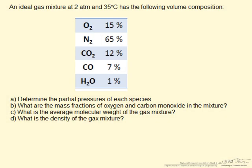This screencast is related to certain physical properties of gas mixtures, specifically that of an ideal gas mixture. The problem states that we have an ideal gas mixture at 2 atmospheres and 35 degrees Celsius with the following composition by volume percent. We are asked to determine the partial pressure of each of these 5 species, the mass fraction of just oxygen and carbon monoxide in this mixture, the average molecular weight of the gas mixture, and then finally the density of this mixture.